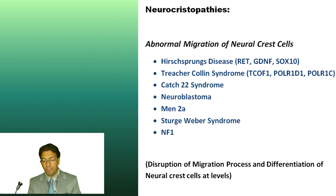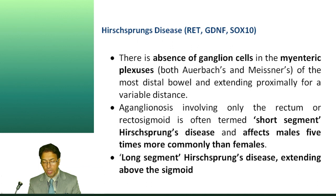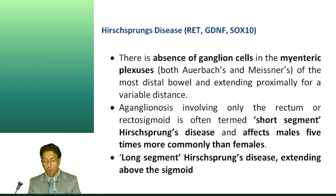When we teach anatomy, embryology, pediatrics, neonatology, or oncology, we encounter a spectrum of diseases. How are they related? Hirschsprung's disease, Treacher-Collins syndrome, CHARGE-22 syndrome, neuroblastoma, MEN-2A (multiple endocrine neoplasia 2A), Sturge-Weber syndrome, and NF-1 (neurofibromatosis 1) — these are the disease conditions in which there is abnormal migration of neural crest cells.